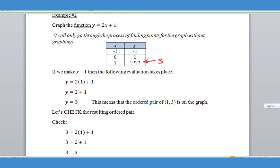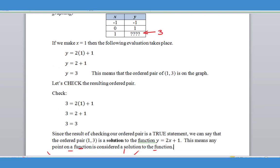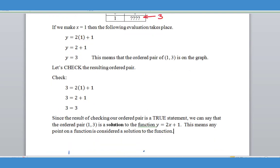Now we can check that ordered pair just like we did in the previous equation. And if we check the ordered pair, we see that we get again a true statement with the resulting check. And so what that tells me is that the ordered pair (1, 3) is a solution to the function Y equals 2X plus 1. So that means any point that I get that would create a true statement is going to be a solution to the function. So every single point on the graph when you graph it is considered a solution to the function.